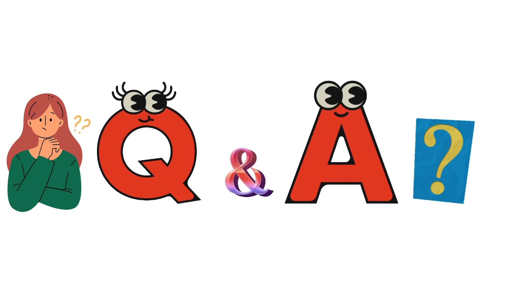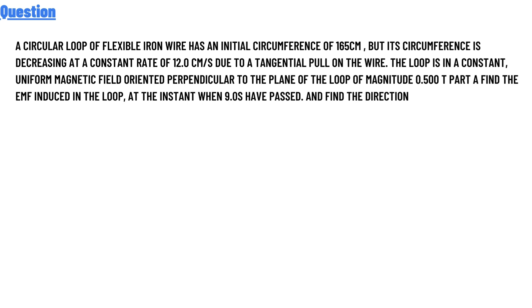Our today's question is: A circular loop of flexible iron wire has an initial circumference of 165 cm, but its circumference is decreasing at a constant rate of 12.0 cm/s due to a tangential pull on the wire.